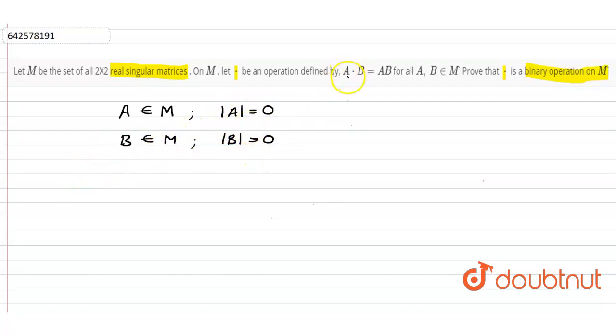And we know that whenever we multiply a 2 cross 2 matrix with another 2 cross 2 matrix, we are again going to get a 2 cross 2 matrix. So this AB, A into B is also a 2 cross 2 matrix and the entries of A and B are also going to be real numbers because the entries of A are real numbers and the entries of B are real numbers. And each entry of AB, we can obtain by a linear combination of entries of A and entries of B. So linear combination of real numbers is again going to be a real number. So entries of A and B are also real and A and B is also having the order 2 cross 2. So the only thing that we need to check is the determinant of A into B.